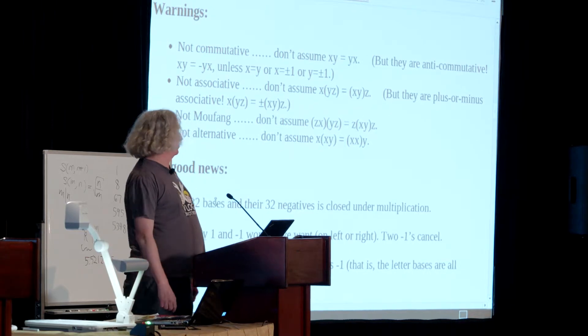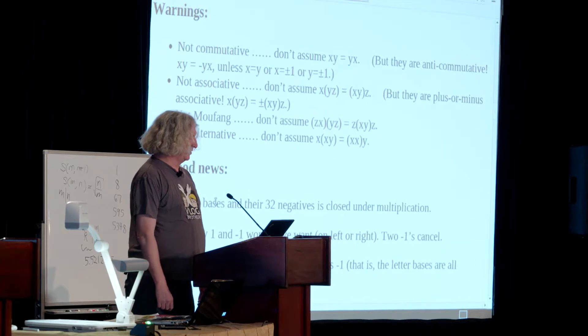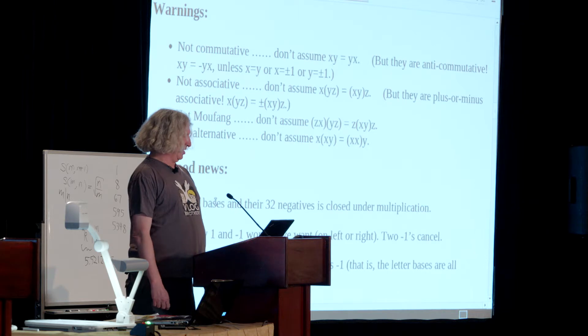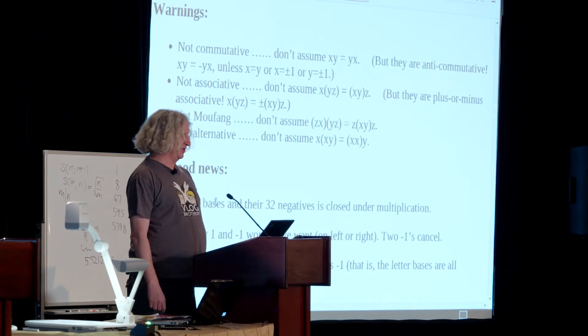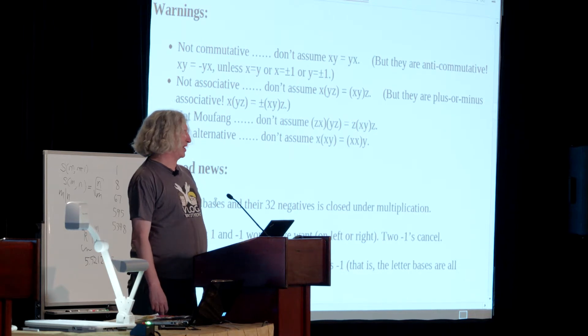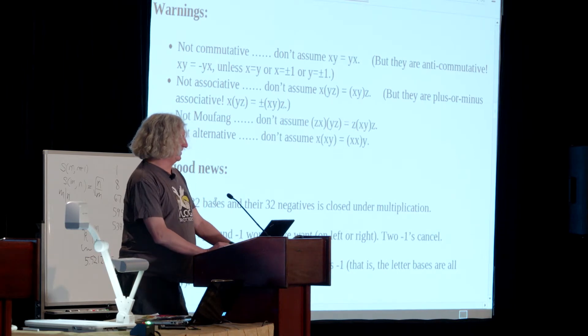Some warnings about this number system. They're not commutative, so don't assume that XY equals YX. They're not associative, so don't assume that you can move the parentheses around. They're not Mufang. They're not alternative. They are some other things. They're anti-commutative. XY is equal to minus YX if X is not equal to Y and neither of them are one. The leapfrog identity lets you multiply by single letters.